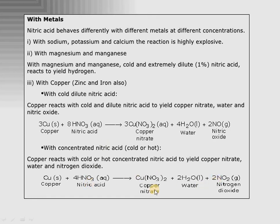These are very, very important reactions. To remember the balancing: whenever dilute acid is there, use the '3Cu' balancing method (coefficient 3 for copper), and for concentrated acid, use the '1Cu, 4HNO3' method (coefficient 1 for copper). If you try to balance by hit-and-trial it may take 3–4 minutes and may still be incorrect. So remember '3Cu' for dilute, '4HNO3' for concentrated — the other numbers follow from there.